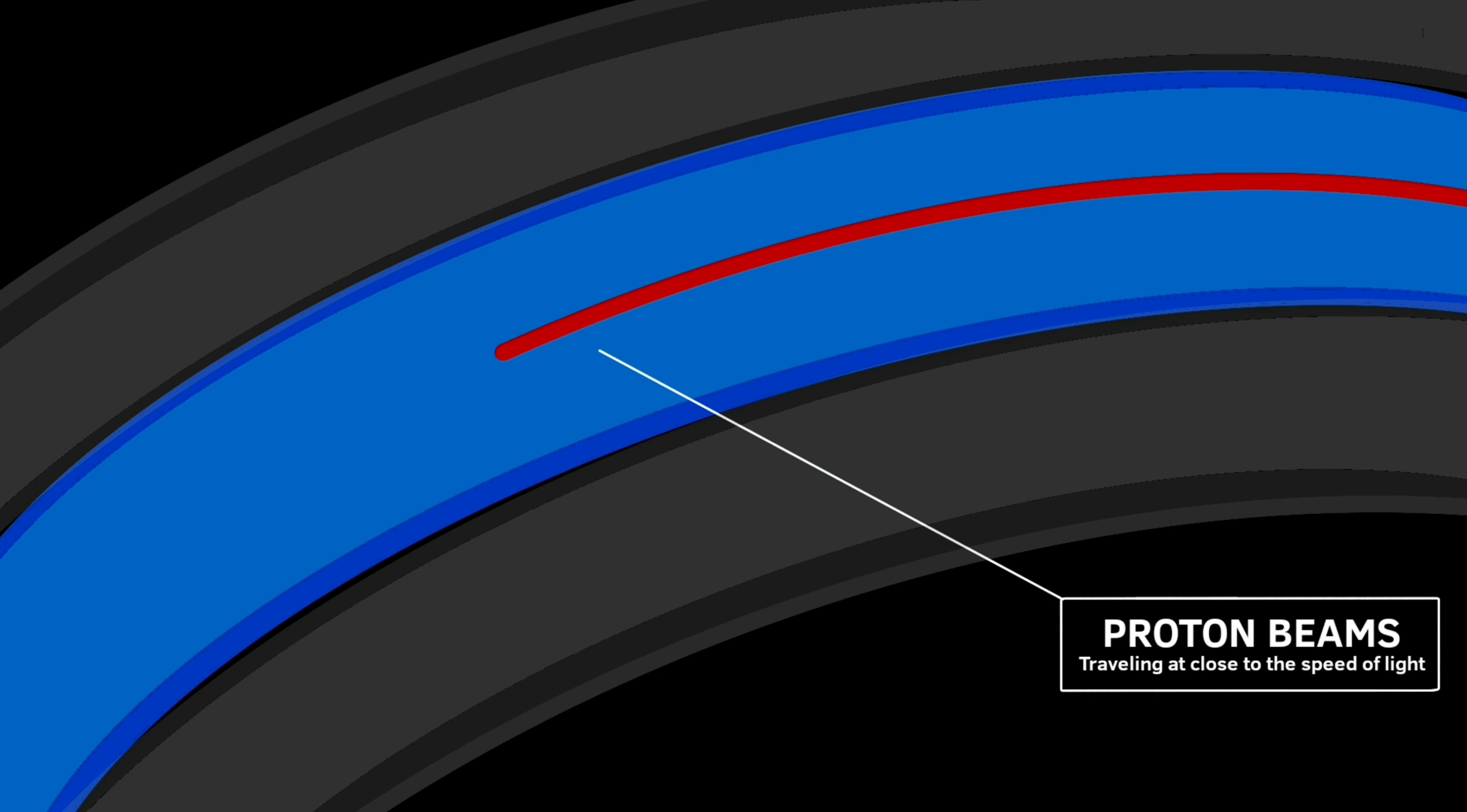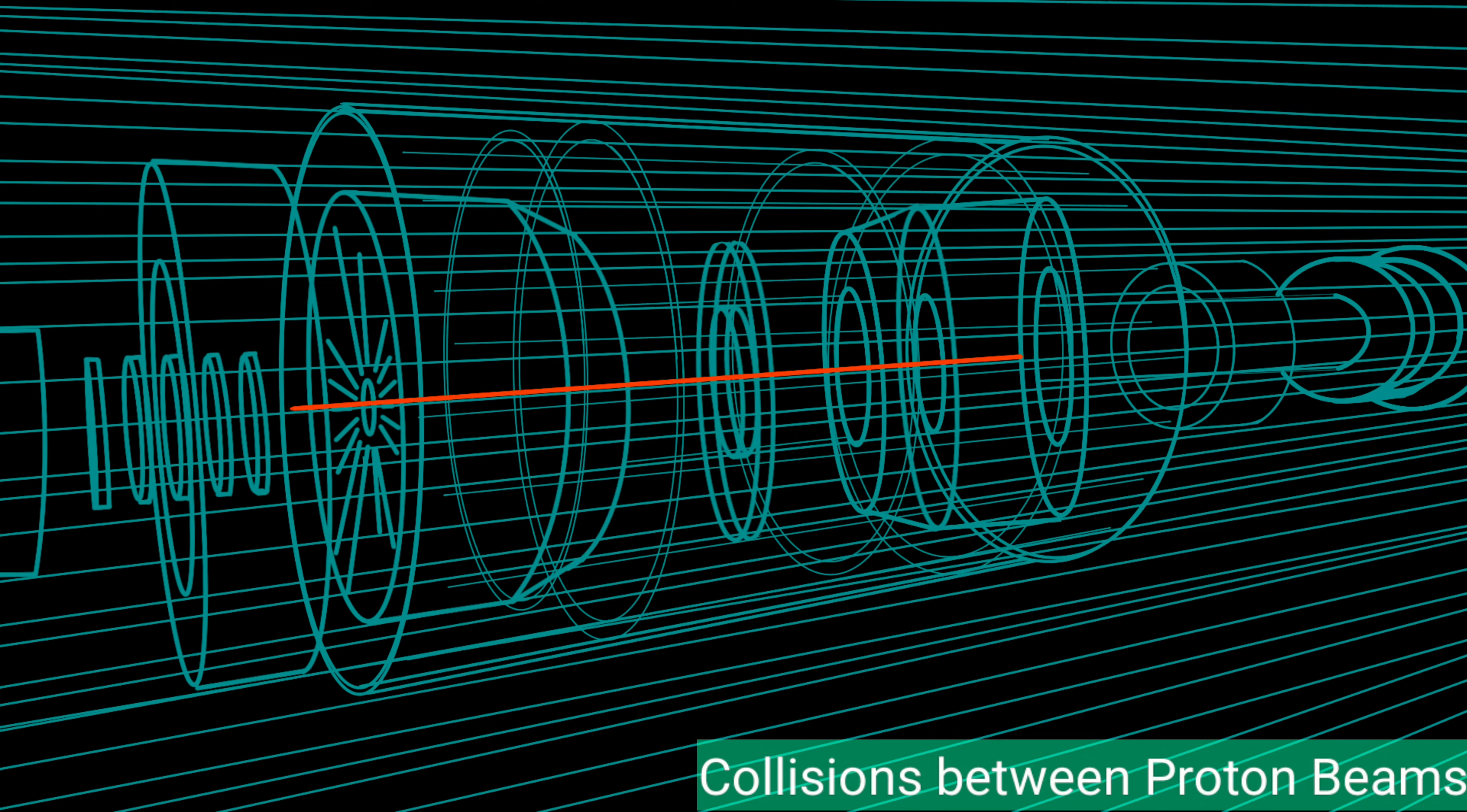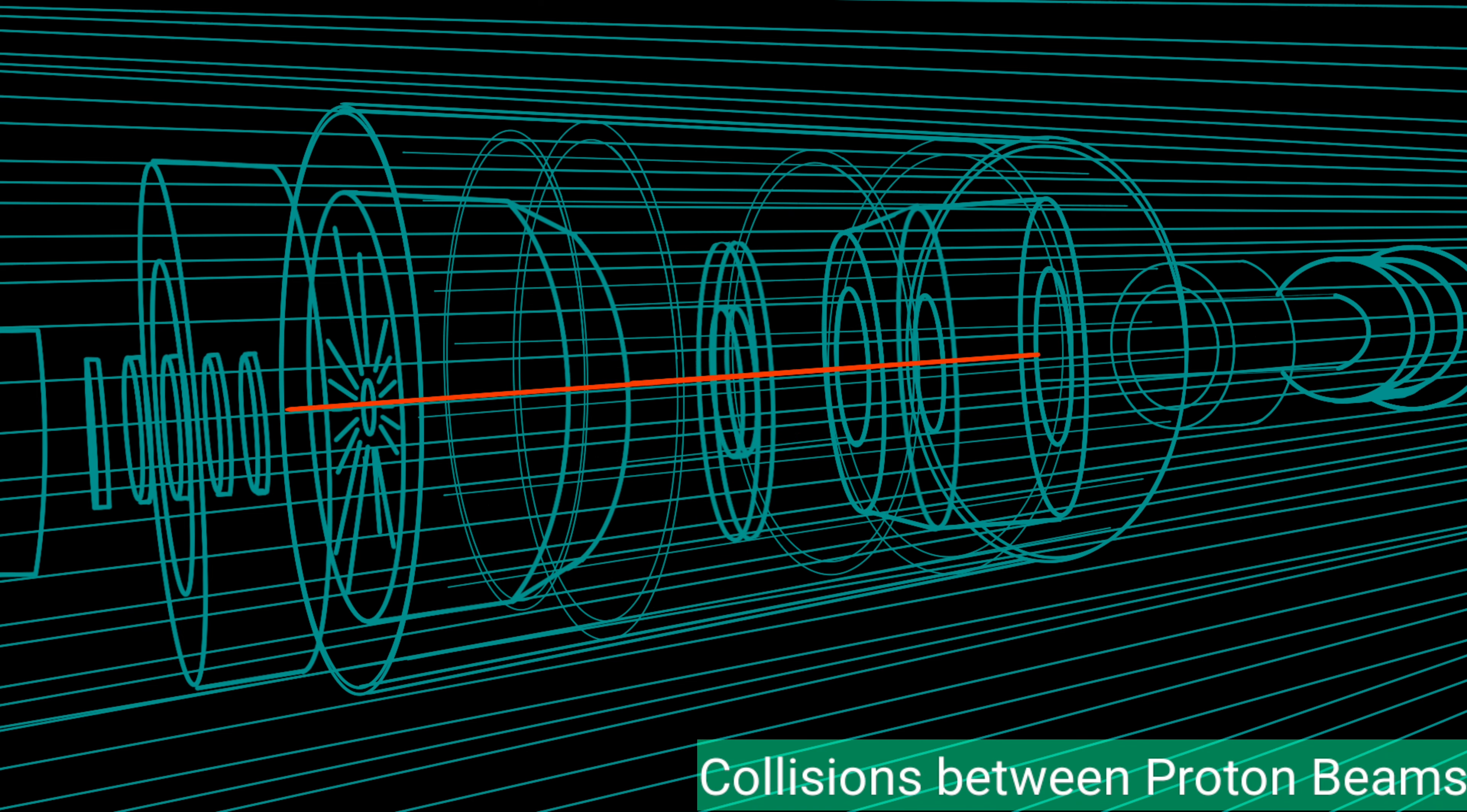Throughout the years 2011 and 2012, ATLAS and CMS detectors were collecting data of the invariant masses of the photon pairs which were being produced in the LHC from the collisions between two protons at a speed of 99.99% of the speed of light.